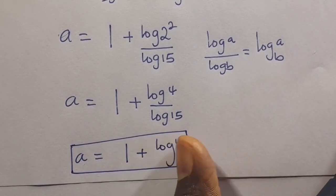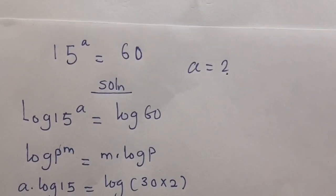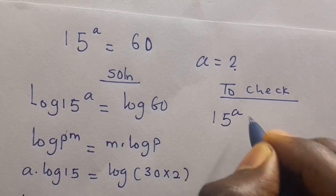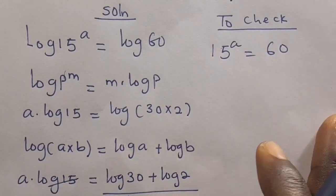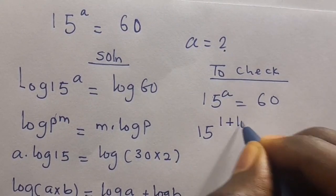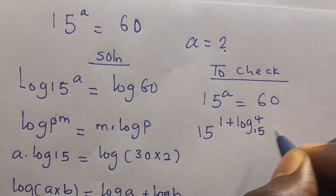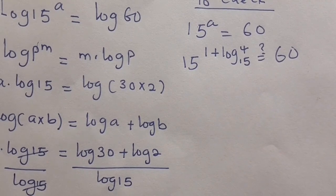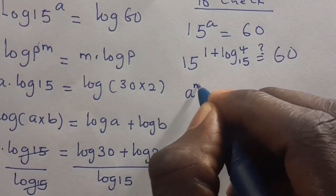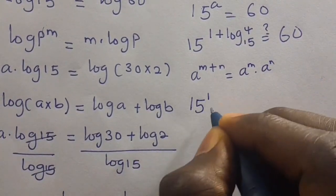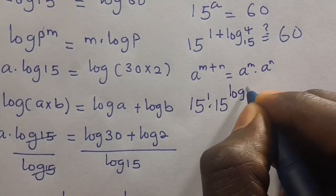To check: we substitute A equals 1 plus log 4 in base 15 back into 15 to the power of A equals 60. Using the index law A to the power of M plus N equals A to the power of M times A to the power of N, we get 15 to the power of 1 times 15 to the power of log 4 in base 15.